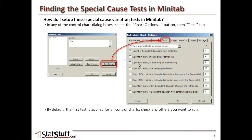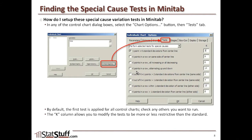By default, the first test is always applied for all control charts. You don't have to use it — you can uncheck it — but by default it's checked. This gives you the option of seeing all eight tests and optionally selecting which ones you want to run on your data.